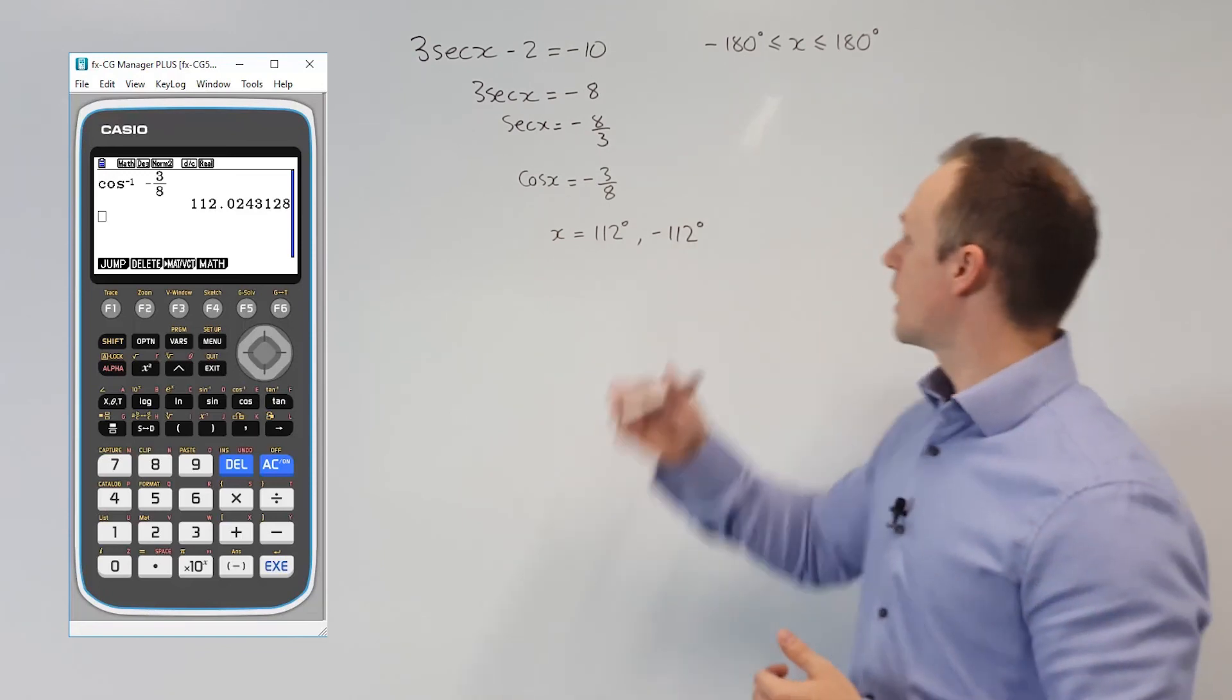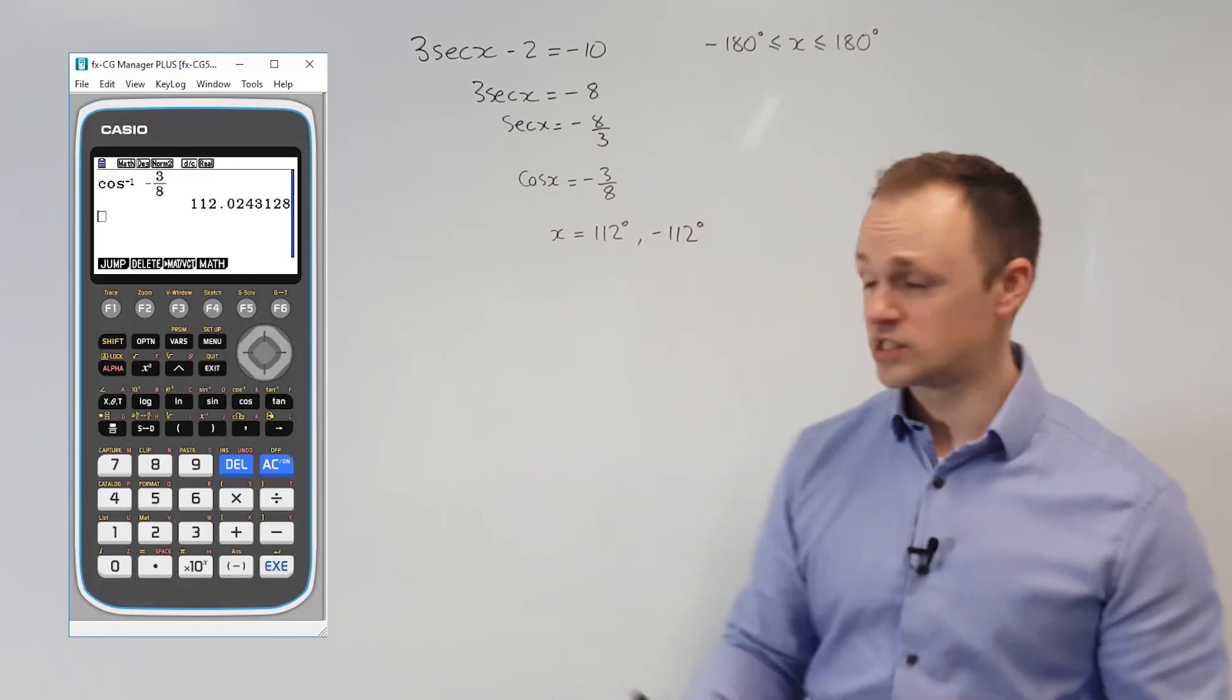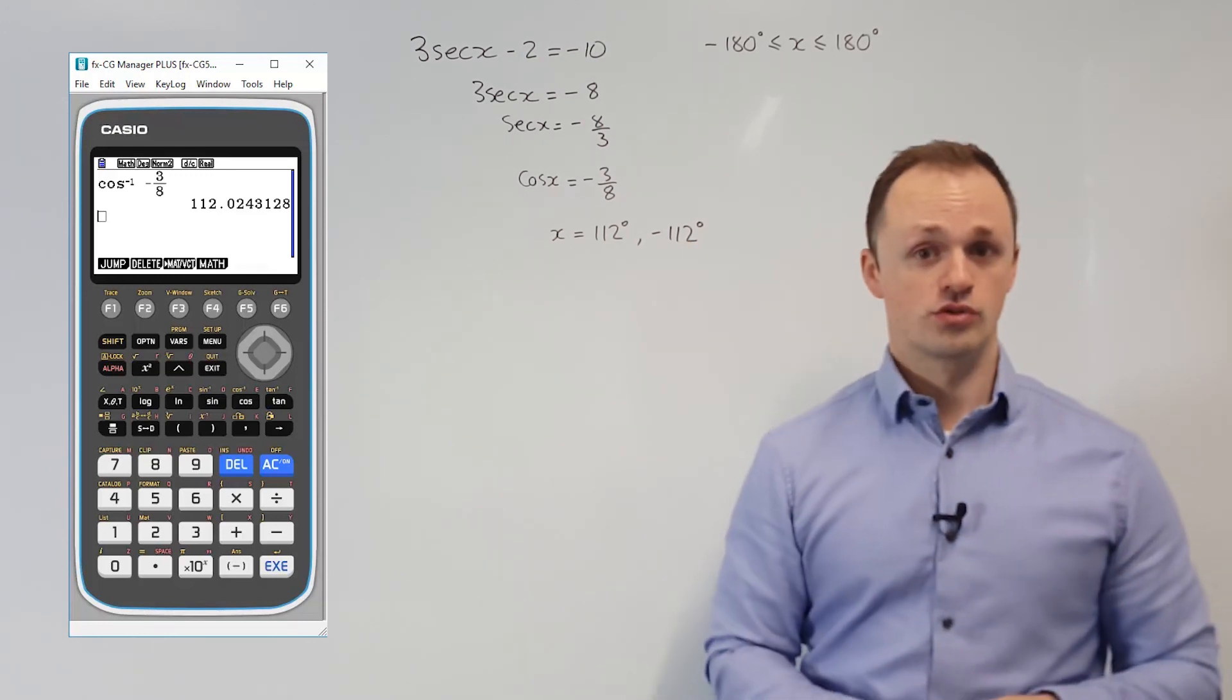If you did use the first solution to get one that was too large, you could then just use the periodic property, which says you could subtract 360 and you would still arrive at minus 112 degrees.